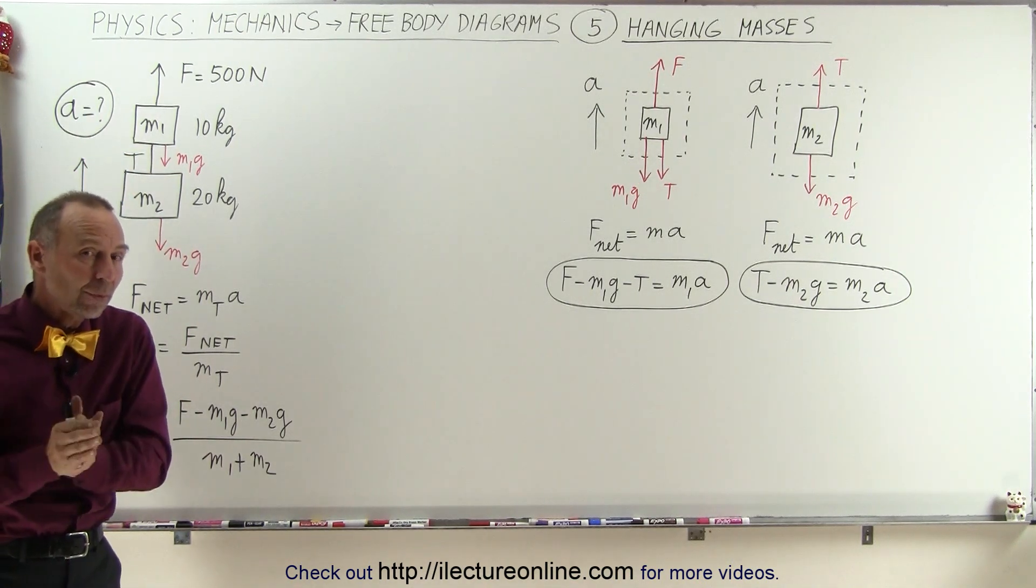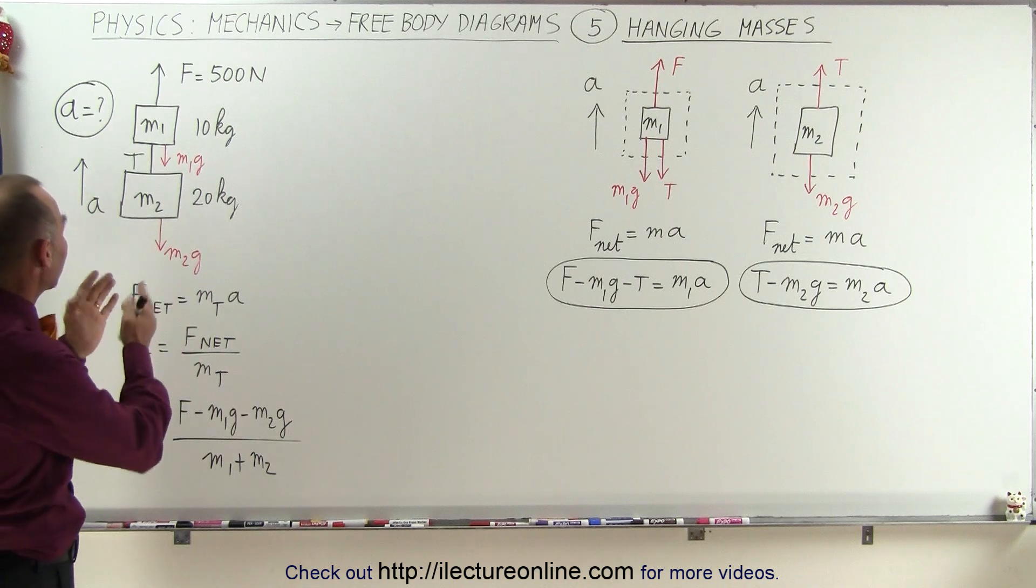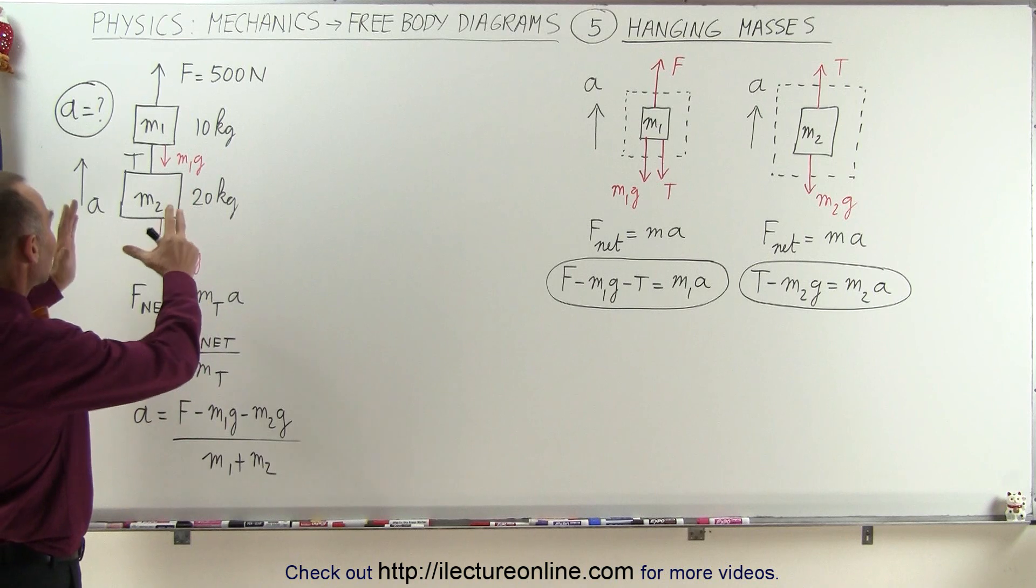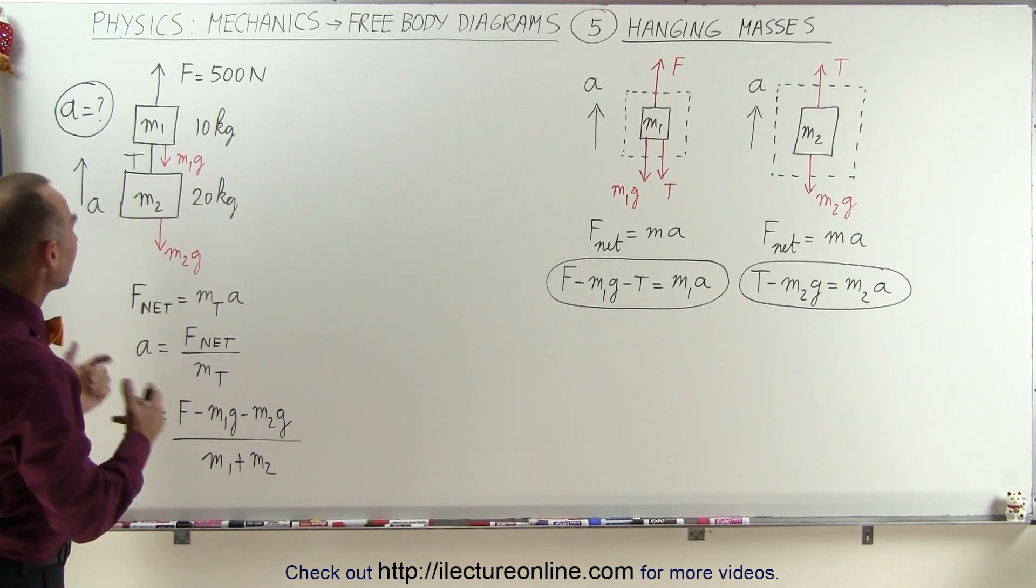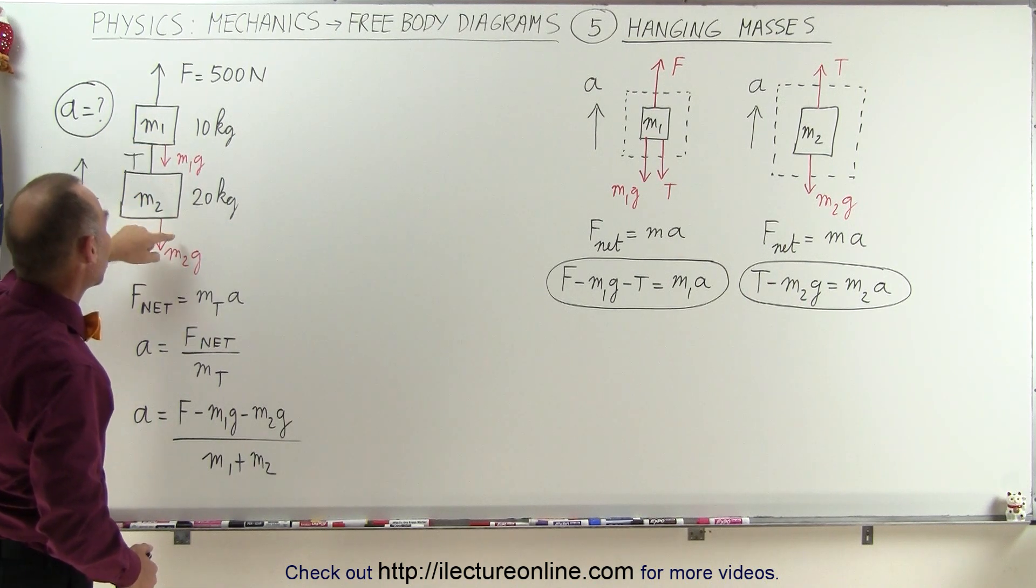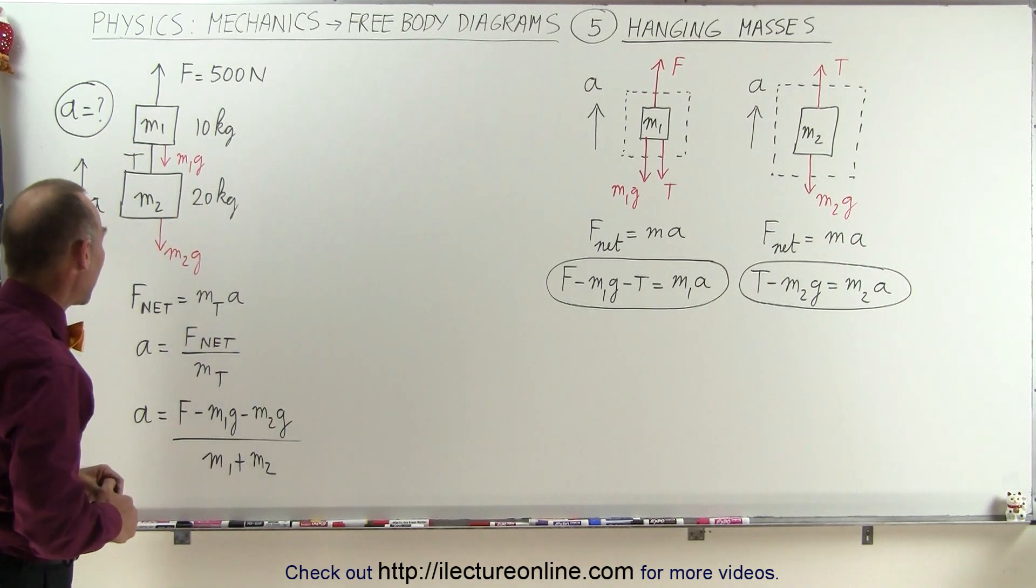Notice if we solve the problem using a single system, in other words we think of it as a single system and we're only considering forces acting on the system from the outside, there's only three forces. We have the force pulling up, the weight on the first mass, and the weight or force of gravity on the second mass.